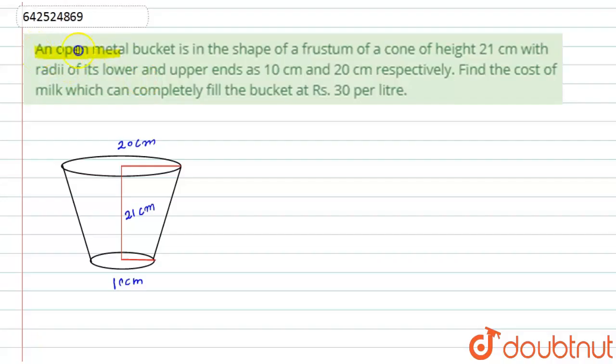Hello student, let's start with the question. Here we have given an open metal bucket is in the shape of frustum of cone of height 21 centimeter with radii of its lower and upper ends as 10 centimeter and 20 centimeter respectively. Then find the cost of milk which can completely fill the bucket at rupees 30 per liter.